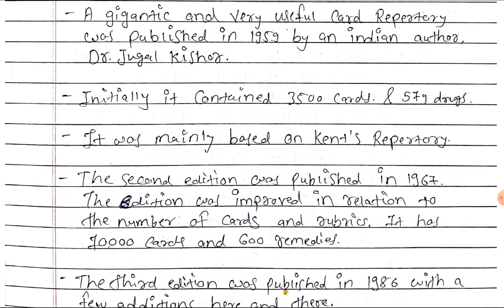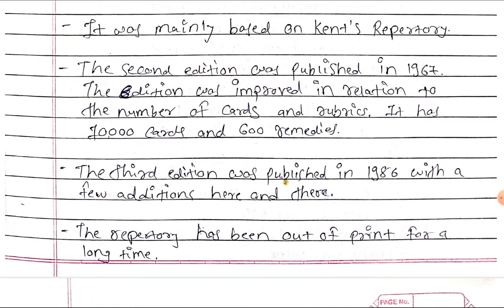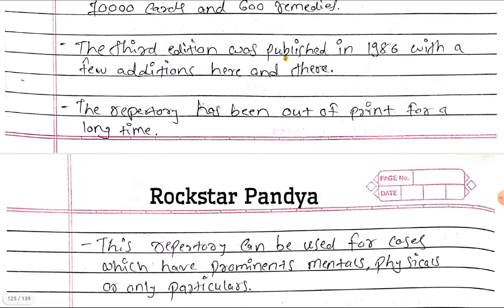The second edition was published in the year 1967. The edition was improved in relation to the number of cards and duplex — it has 10,000 cards and now 600 remedies. The third edition was published in the year 1986 with a few additions here and there. The repertory has been out of print for a long time now.